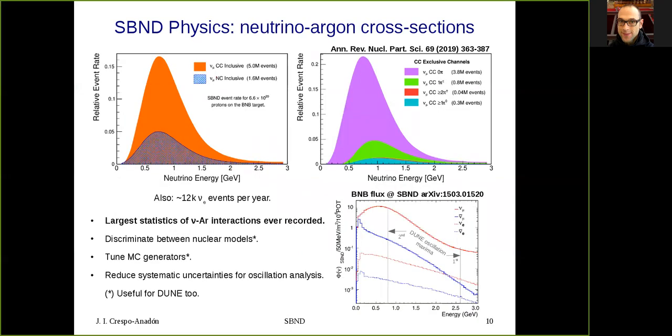Then we have the cross-section program and SBND will have the largest statistics of neutrino-argon interactions ever recorded. We will accumulate five million events of mu neutrino charged current inclusive interactions and about 1.6 million events of neutral current mu neutrino interactions. In addition, we will have about 12,000 electron neutrino events per year. But not only in inclusive mode, thanks to the excellent particle identification capabilities of the liquid argon TPCs, we can also study with detail all the exclusive channels and distinguish between the multiple pion production channels. This will allow us to discriminate between nuclear models and tune Monte Carlo generators, which is also useful for DUNE. With these measurements of cross-sections, we will be able to reduce the systematic uncertainties for the oscillation analysis.